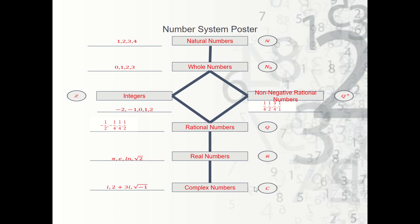So this is the number system. What you should notice is that numbers like one are in every set — any number in the natural numbers is also a whole number, an integer, a non-negative rational number, a rational number, a real number, and a complex number. Every integer is also a rational, real, and complex number. Every real number is also a complex number. So numbers can belong to multiple sets at one time, but there's only one set where they directly fall in — it's the first instance of them falling into the set.